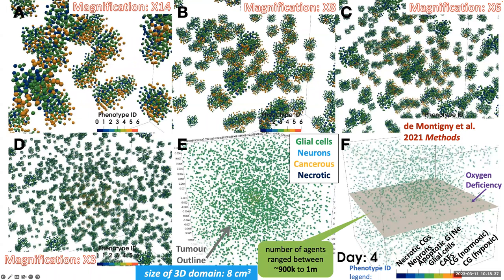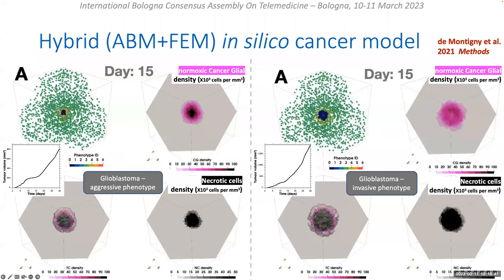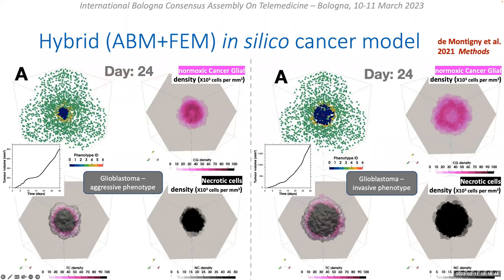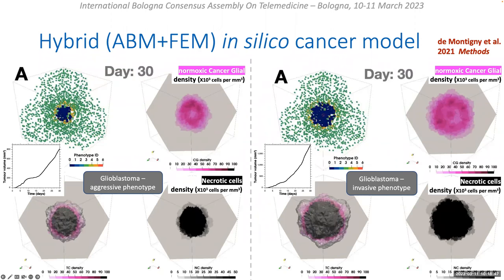In this slide, we compare the hybrid model simulation of an aggressive glioblastoma on the left to that of an invasive one on the right. The line plots of the brain tumor volume depict the development over time, while in subfigures labeled A, we show the cell dynamics using Biodynamo: host cells shown in green, the active or proliferative cancer cells shown in orange, and the necrotic ones in dark blue.